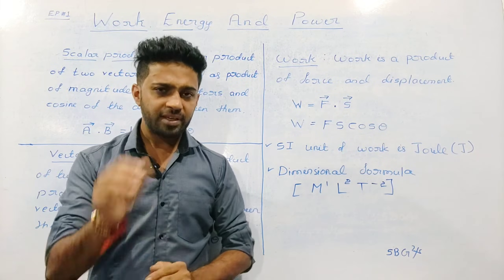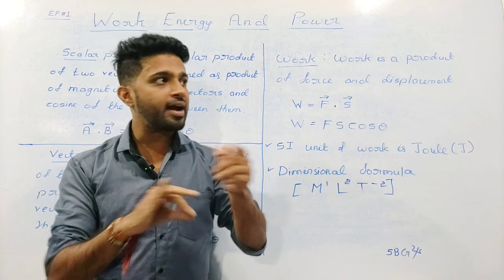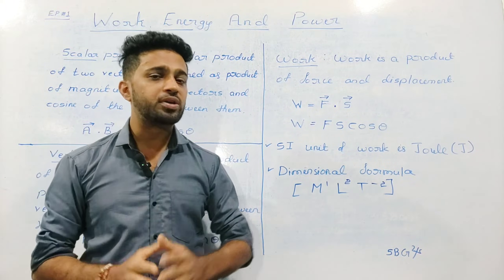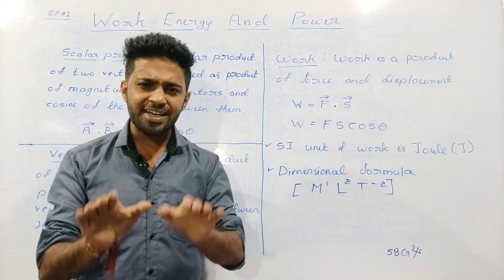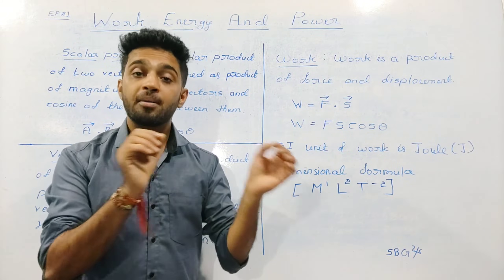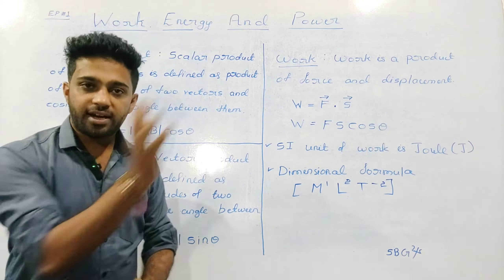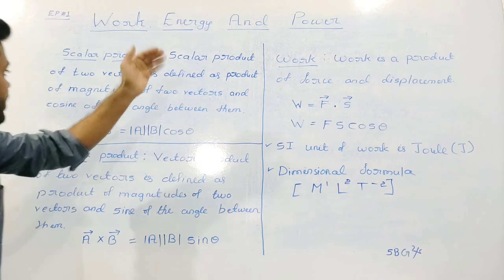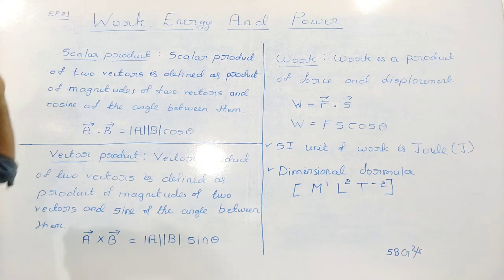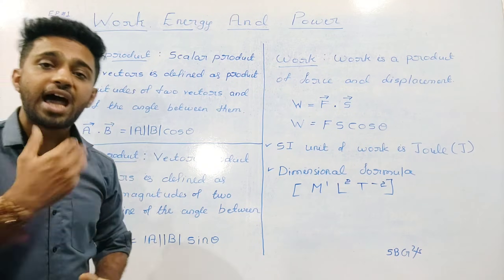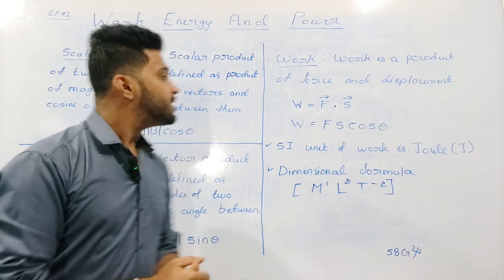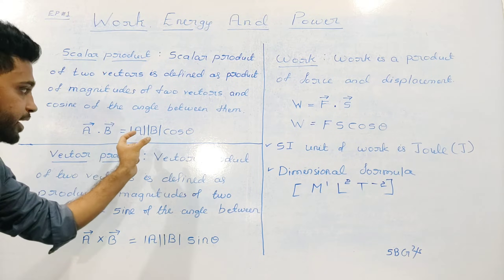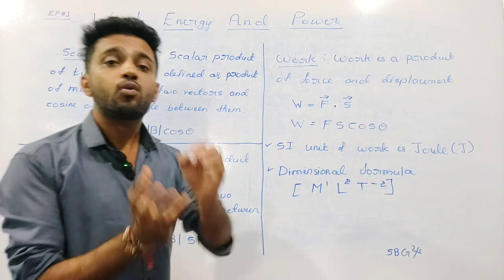This chapter covers Scalar Product, Vector Product, Work, and Work done by Variable Force. The first concept is the Scalar Product. The definition written on the board: Scalar Product of two vectors is defined as the product of magnitudes of two vectors and the cosine of the angle between them. Mathematically, Vector A dot Vector B is equal to mod of A into mod of B into cos theta, where theta is the angle between Vector A and Vector B.